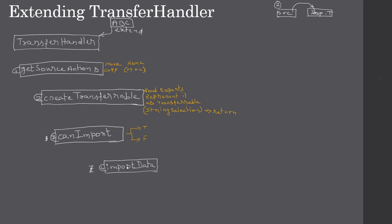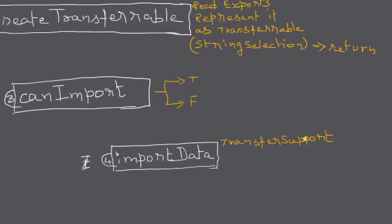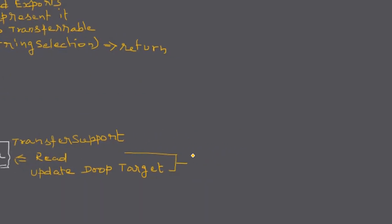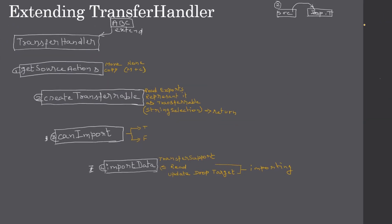The importData override actually performs the import operation. We read everything in the Transferable object — the data in transition. We get a TransferSupport object, and from the TransferSupport we get the Transferable. Once the Transferable is in hand, we can read the data and then update the target. These two steps together constitute importing. Finally, the drop location will have all the data imported, meaning the drag-and-drop has succeeded.